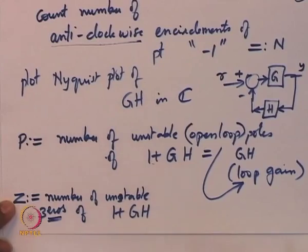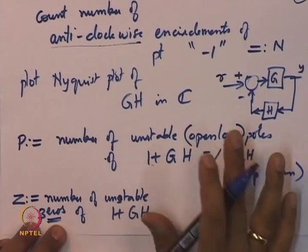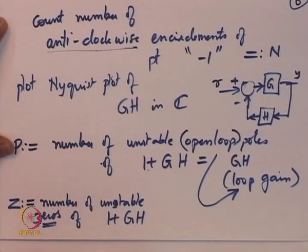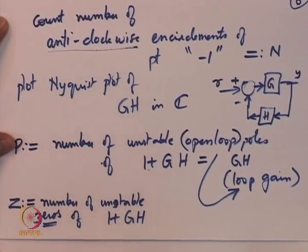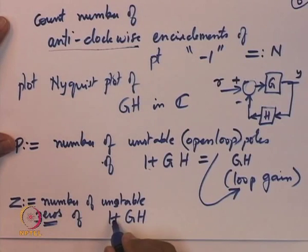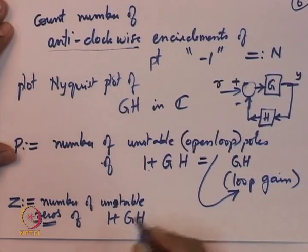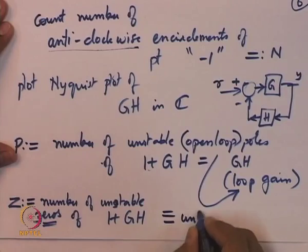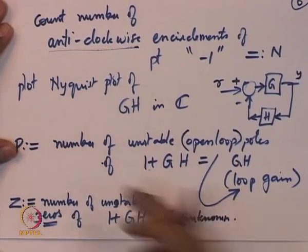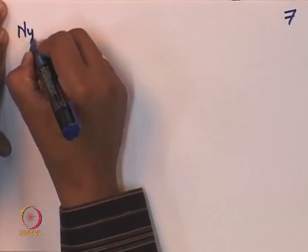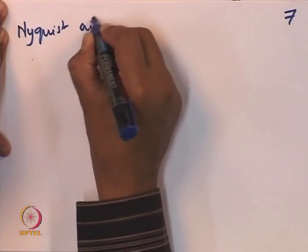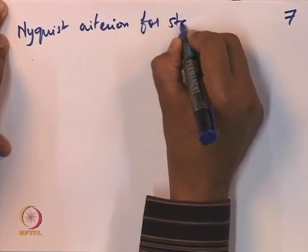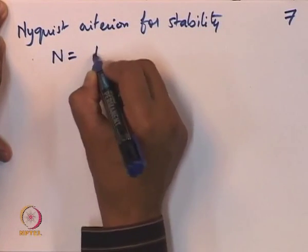Z is the number of unstable zeros of 1+GH, not of G or GH. This is often stated wrongly in various books. Z is unknown in the Nyquist criteria for stability — it is what we are trying to find. We use N and P, which are known, and plug them into the equation N = P − Z to obtain Z.